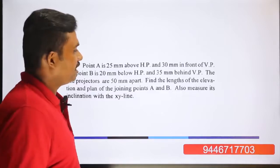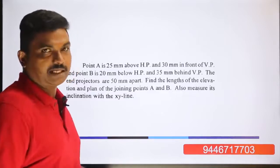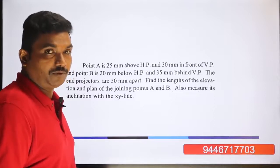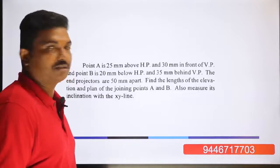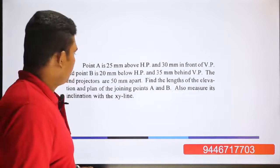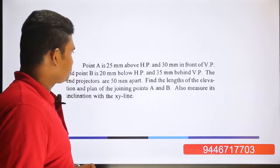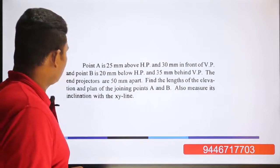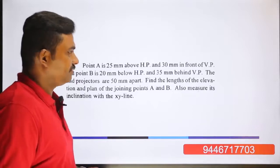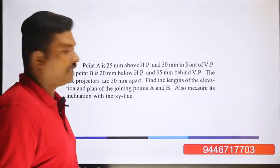AB is the top view and A'B' is the front view. The length in the front view is the elevation length, and the length in the top view is the plan length.